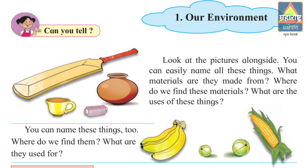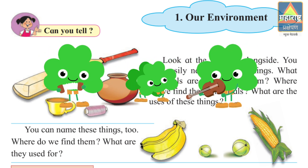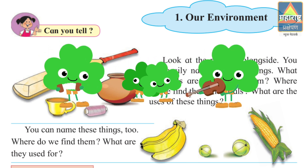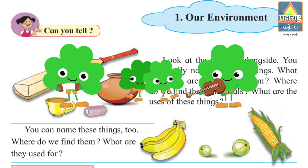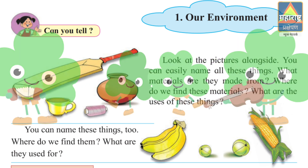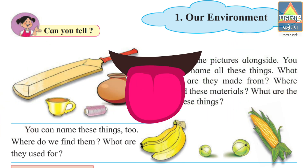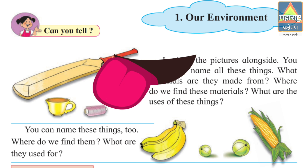Banana, amla, maize. Where do we find them? We get all this material from the plants. What are they used for? These are all used for eating.